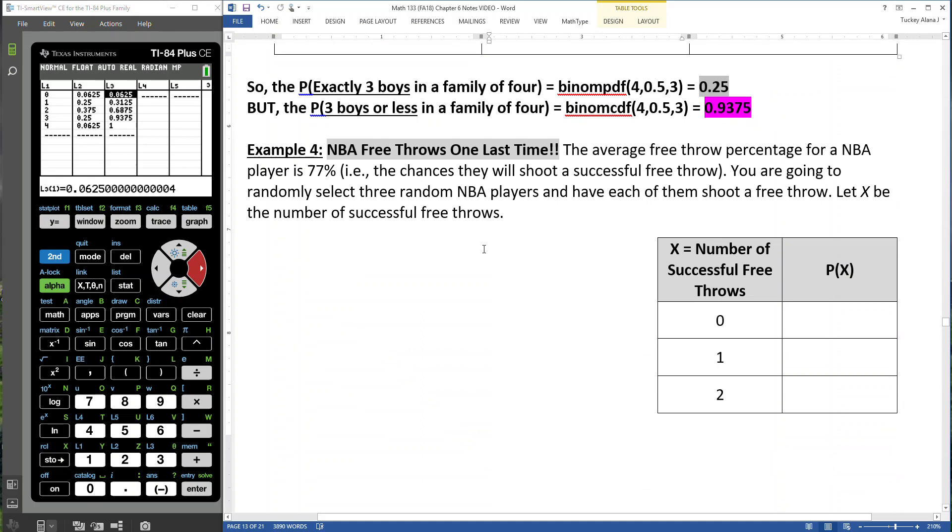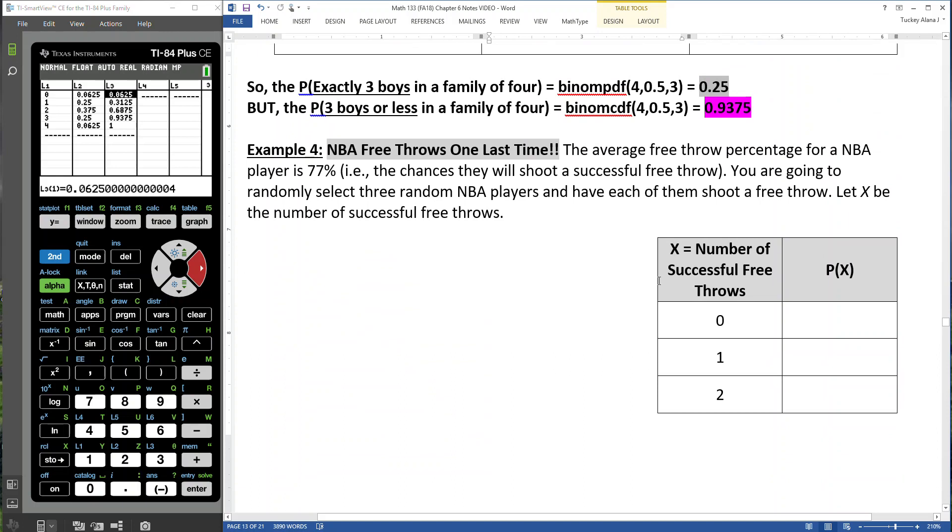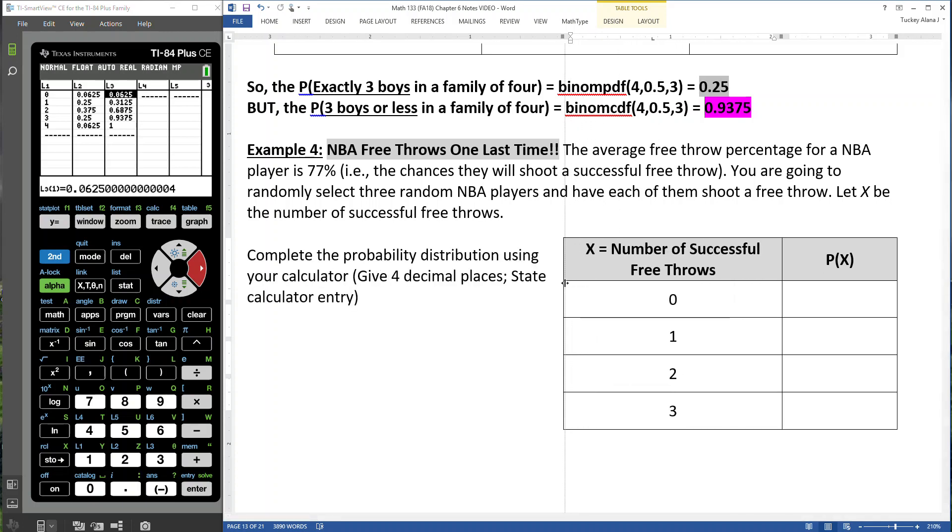So what about the NBA free throws? We could do them with the same idea, right? So if we want to find the probability of exactly two successes, three successes, and so on. I know we did it longhand at the beginning, but according to this, we could use a really simple binom PDF to do this. So if I want the probability of exactly two successes, then I would use binom PDF, right? Because I want the probability of exactly so many successes.